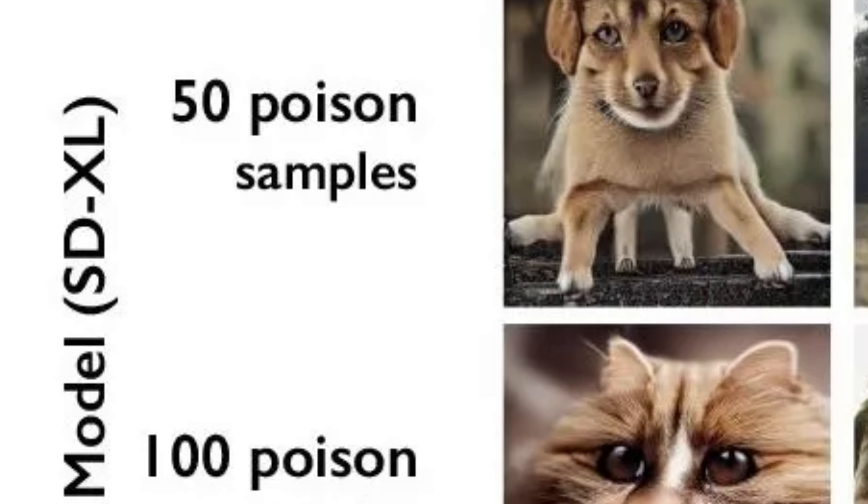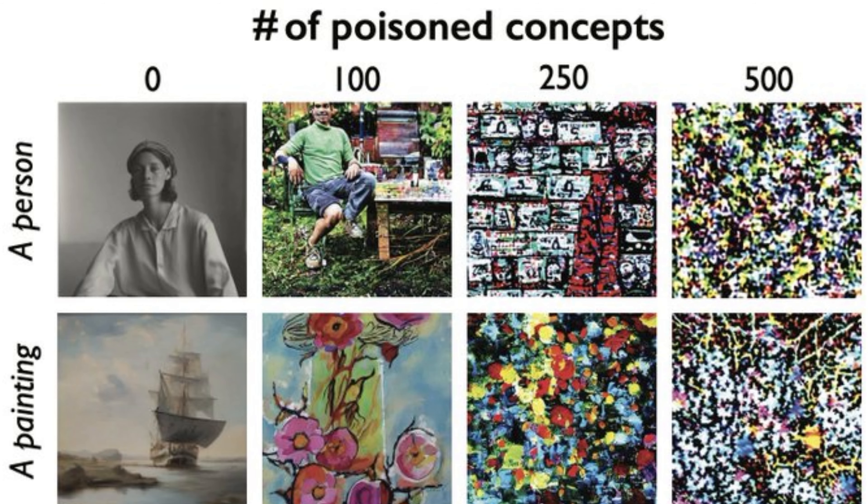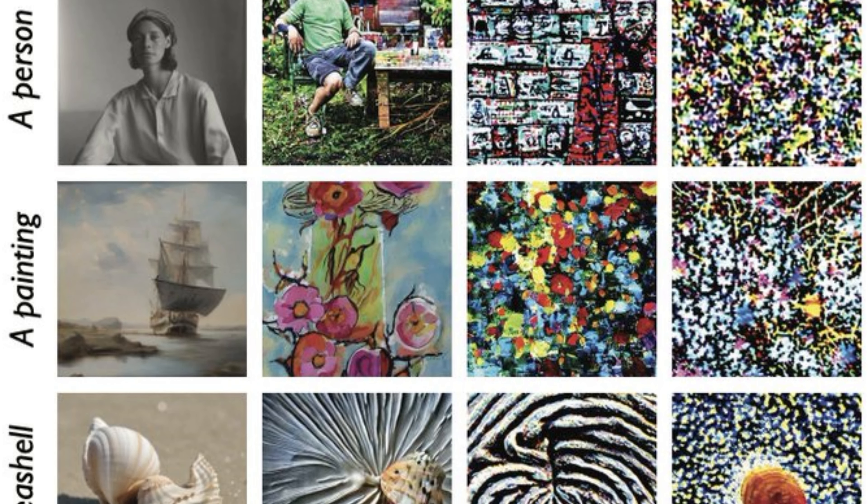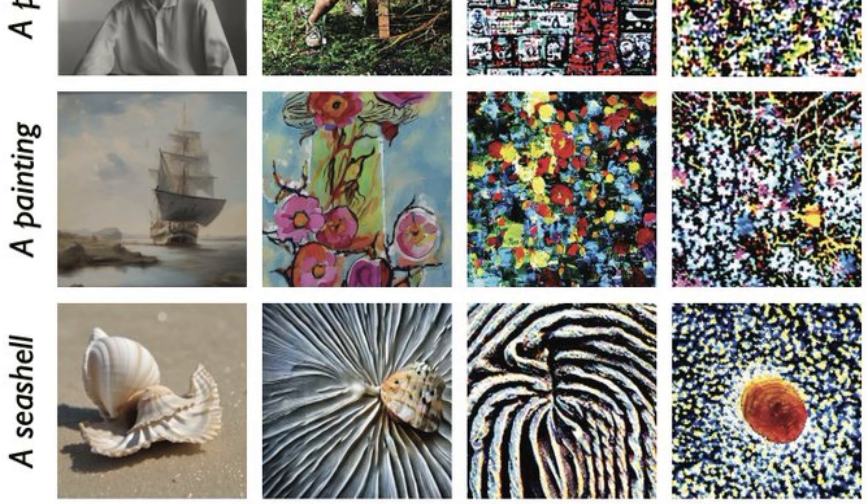The poison attack also works on similar related images and concepts. For example, if the model ingested a poison image associating 'dog' with an image of a cat, the prompts 'puppy' and 'Doberman' would similarly be affected and give weird cat results. The researchers found that the more poison images are out there, the more damage it will cause — and also that the poison data is very difficult to remove, as it requires tech companies to find and delete each corrupted sample.